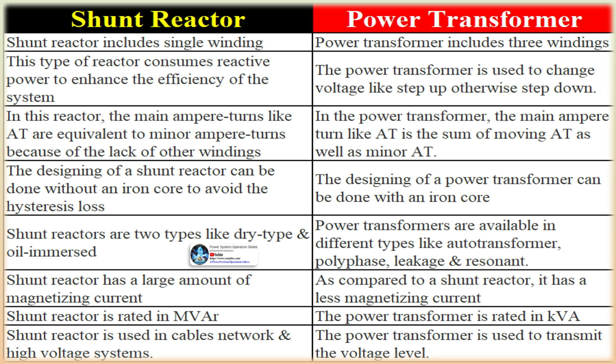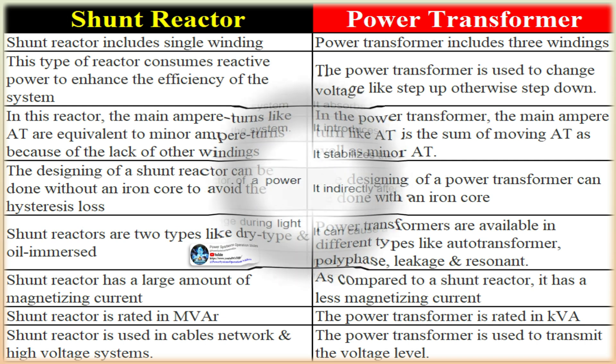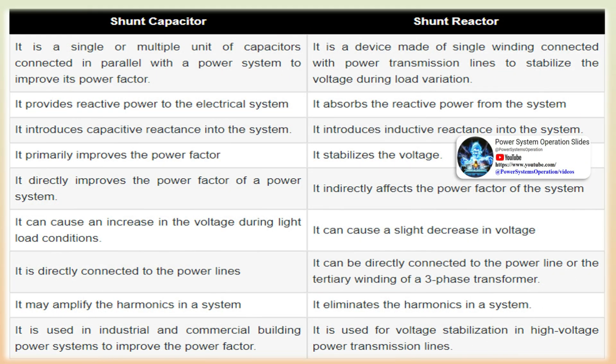In a power transformer, primary ampere-turns equal the sum of exciting ampere-turns and secondary ampere-turns. A shunt reactor may be designed without an air or iron core to prevent hysteresis loss, as there are large amounts of magnetizing current compared to a power transformer. Shunt reactors are rated in MVAR while power transformers are rated in MVA. Shunt reactors are used in high-voltage systems and cable networks to improve system efficiency, while power transformers are used to transfer the voltage level.